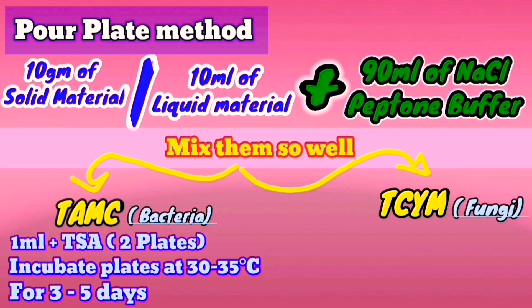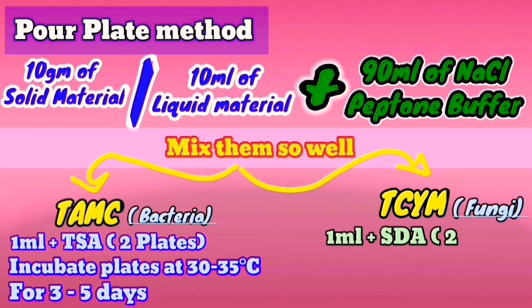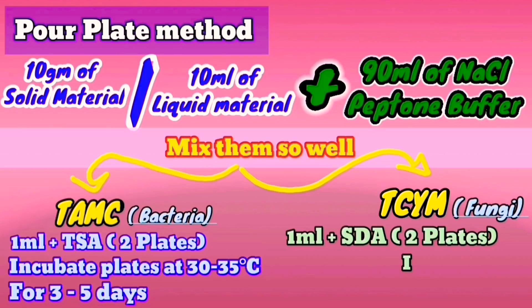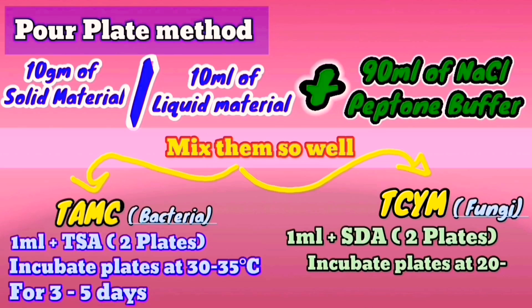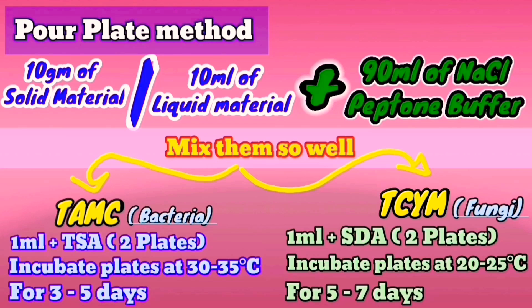For detecting total combined yeast and mold count, add 1 ml of diluted buffer into a sterile petri dish, then add sterile Sabouraud dextrose agar and incubate plates inverted at 20 to 25 degrees Celsius for 5 to 7 days.